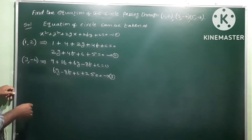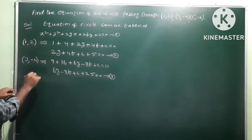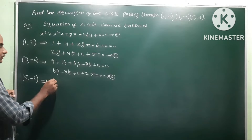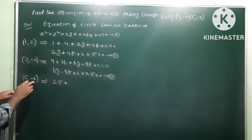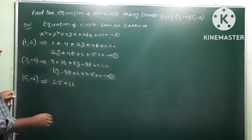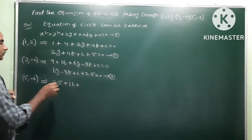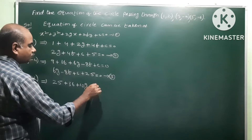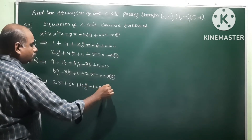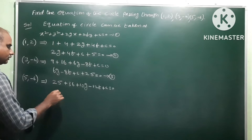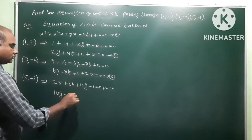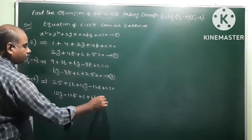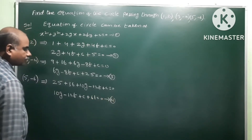Third point: (5, -6). So x=5, y=-6. x² = 25, y² = 36. 2g·x = 10g, 2f·y = -12f. Plus c = 0. So 10g - 12f + c + 61 = 0. Let us say this is equation number 4.